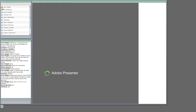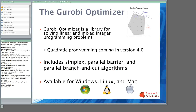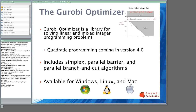As Pam mentioned, we're going to be taking a tour of the Gurobi Optimizer in the next hour. So what is the Gurobi Optimizer? It's a library for solving linear and mixed-integer programming problems — LPs and MIPs. We're actually going to be adding quadratic programming — QP and MIQP — in version 4.0, which is due out in November. The Gurobi Optimizer includes the simplex and barrier algorithms for solving continuous models, and we also have a parallel branch-and-cut algorithm for solving mixed-integer programming models.